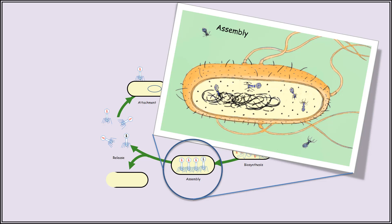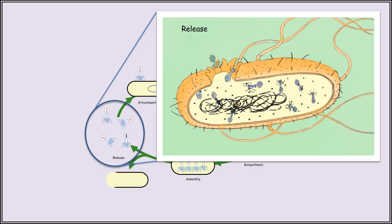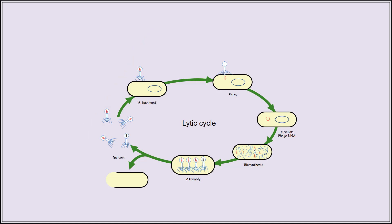These components are then self-assembled in what's known as the assembly step inside the cytoplasm. This process can generate anywhere between 50 to 200 new bacteriophage particles. At one point, the bacterial cell becomes so weak that it will erupt, releasing the newly formed particles, and the cycle continues when these new particles attach to their next bacterial hosts. What I've just described is the lytic cycle of bacteriophage.